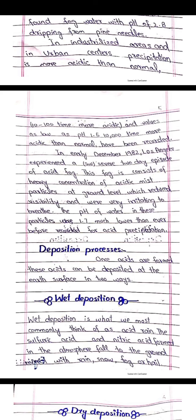Once acids are formed, they can be deposited at the Earth's surface in two ways. The first is wet deposition and the second is dry deposition. In wet deposition — what we most commonly think of as acid rain — the sulfuric acid and nitric acid formed in the atmosphere fall to the ground mixed with rain, snow, fog, or hail.